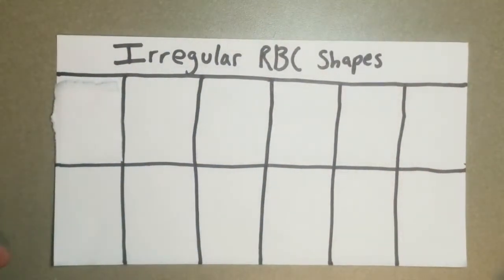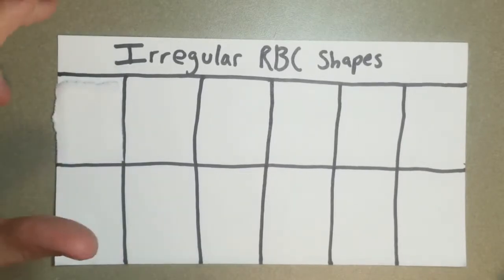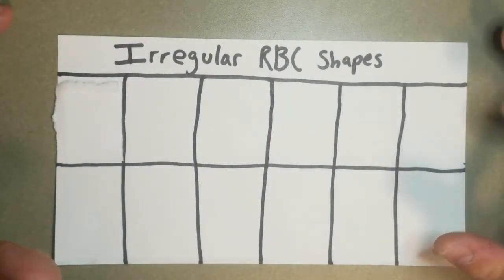How's it going? We're going to talk about some irregular red blood cell shapes right now. Just to clear up, the overarching term here for all of these is poikillocytosis. That just means there's something wrong with the shape of the red cell.